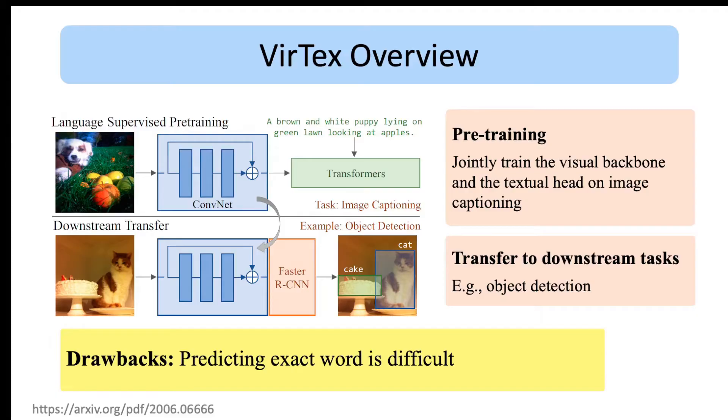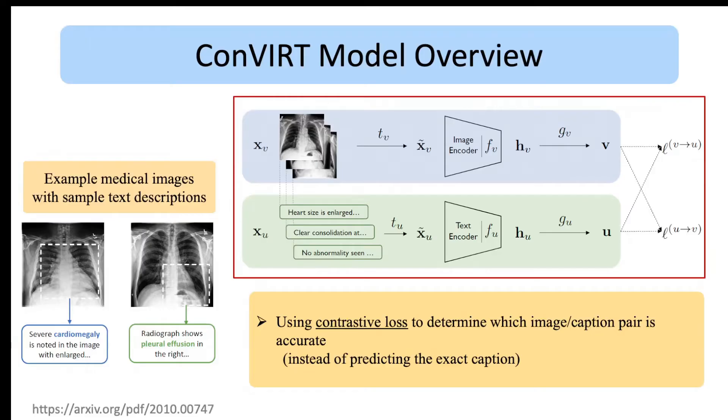So ConVIRT and CLIP models both opted for a different approach. The ConVIRT model is specifically proposed for medical images, where getting supervised labels requires domain experts and is therefore very costly. Two example images and their descriptions are shown, with a sentence randomly sampled from the corresponding medical document. ConVIRT tries to learn image representations using natural language supervision. The first difference between ConVIRT and VirTex is that here the visual and textual networks work in parallel.